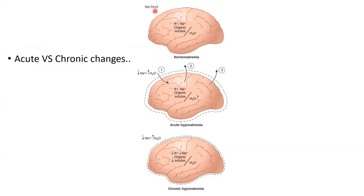Okay, so this is the brain and this is the ECF. He is now talking about normal natremia - that sodium is normal, everything is nice, nothing is happening. You create an acute hyponatremia, what you do is...